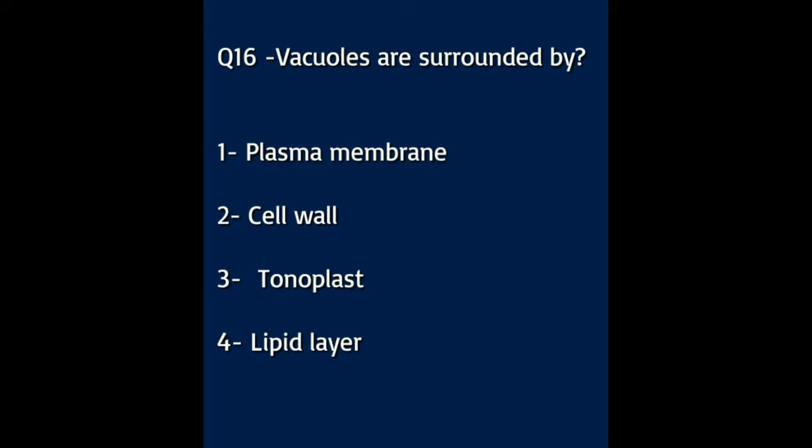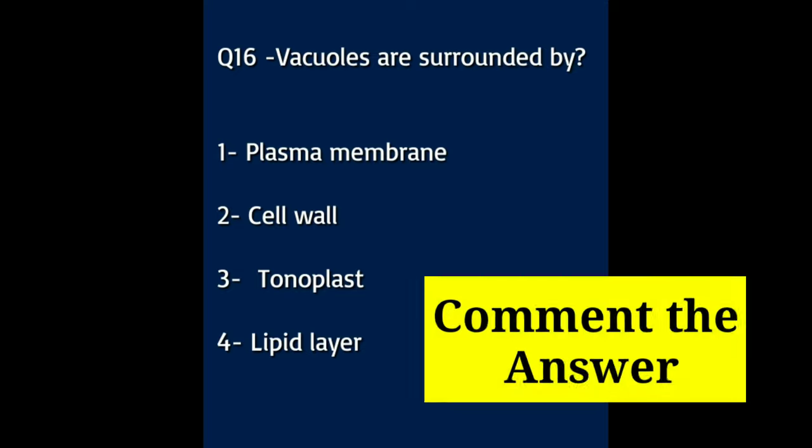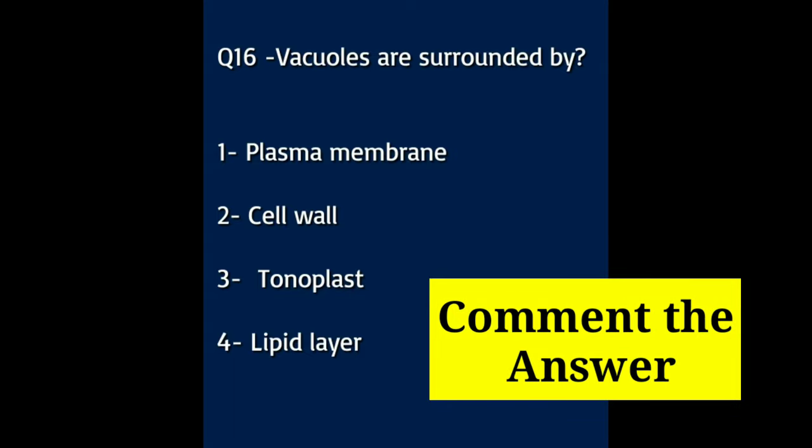Question number sixteen: vacuoles are surrounded by — Option A: plasma membrane. Option B: cell wall. Option C: tonoplast. Option D: lipid layer. You need to comment the answer in the comment box.